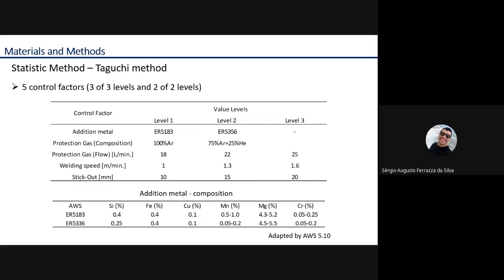Welding speed in meters per minute: level 1, 1 meter per minute; level 2, 1.3; and level 3, 1.6. And stick-out in millimeters: level 1, 10; level 2, 15; and level 3, 20.